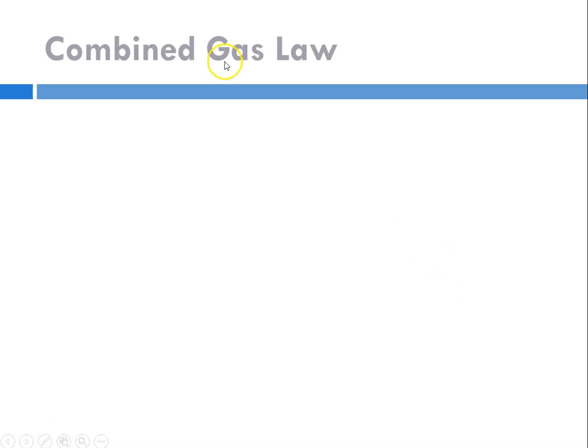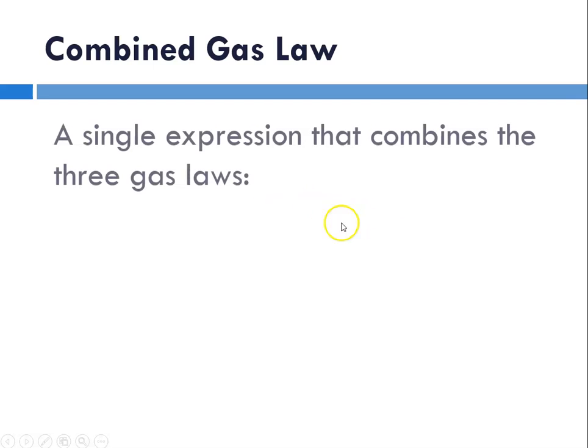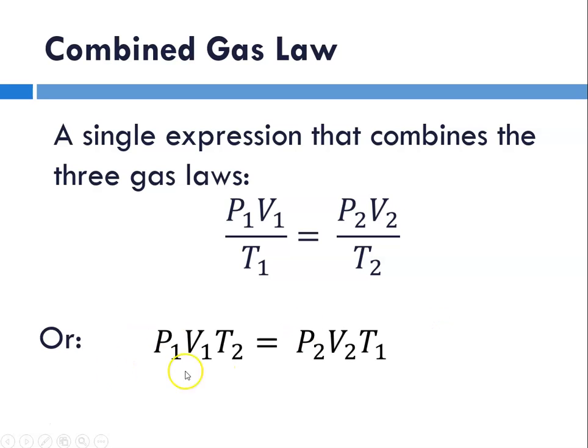So it's convenient to put all of these laws into one combined gas law. So it's a single expression that combines the three laws Boyle's, Charles, and Gay-Lussac's. And it looks like this. P1 V1 over T1 equals P2 V2 over T2. Or P1 V1 T2 equals P2 V2 T1.